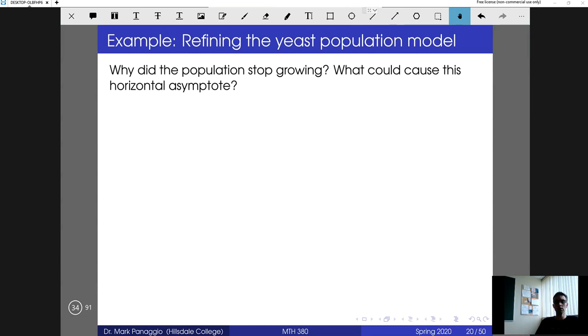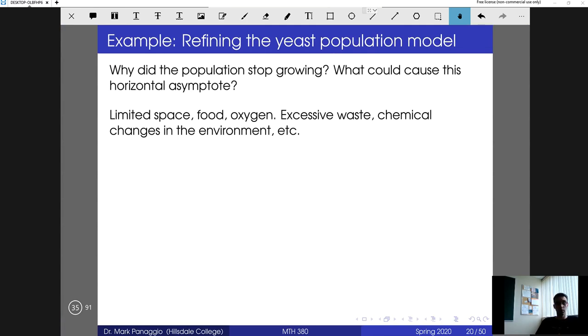In order to do that, we have to think about why. What is it that causes the population to stop growing? There are a number of factors that might come to mind. There may be limited space. If we're growing in a petri dish, there may not be room for the yeast to continue to grow. There may be limited resources, not enough food, not enough oxygen for respiration to continue. There could be waste which causes a toxic environment. All of these could be summarized with a single idea: that given the environment that yeast is in, there is some sort of limiting capacity. You cannot have more than a certain amount of yeast in a petri dish. At some point it's just not possible for it to continue to grow.